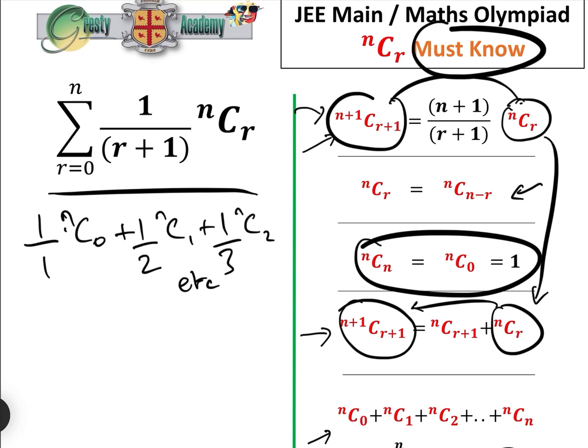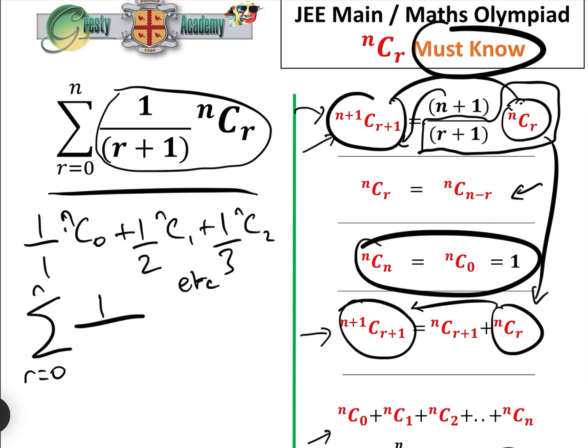Well, clearly, this is horrific to solve. But if we look 1 over r plus 1 nCr, and we look at this bit here of this formula, we basically have 1 over r plus 1 nCr. And if we move the n plus 1 down there, we can rewrite this as sum from r equals 0 to n of 1 over n plus 1 times n plus 1 choose r plus 1. I've just used this formula here.